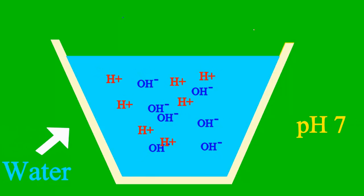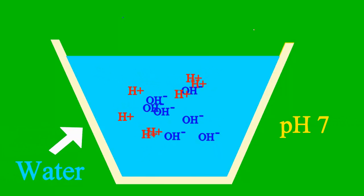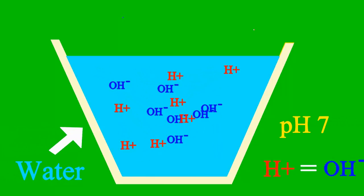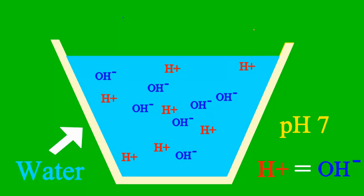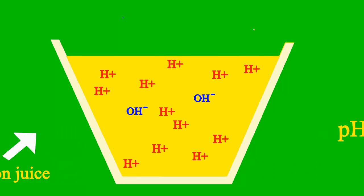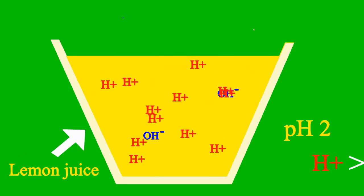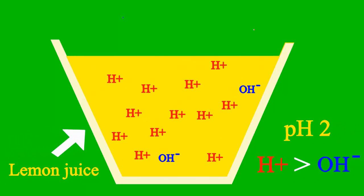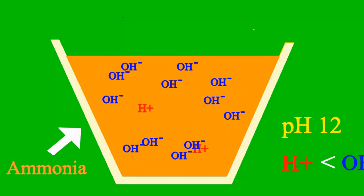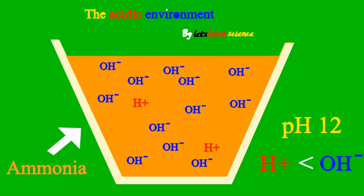When the pH is 7, it's a case where the sample is neither an acid nor a base. But less than 7, it's an acid. More than 7, it's a base all the way.